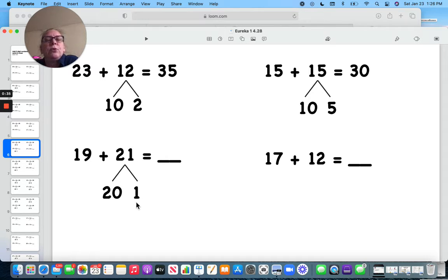Okay, here we have 20 and 1. And the reason this one is broken apart is because I know if I add 1 to a 9, I get a 10. So 19 plus 1 is 20. 20 and 20 is 40.